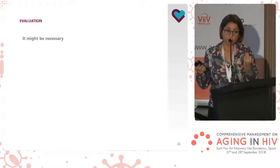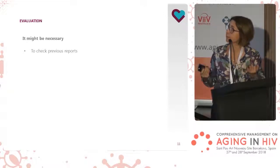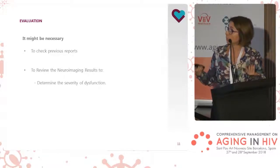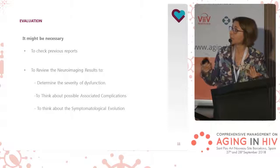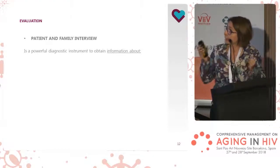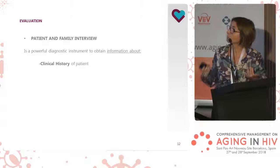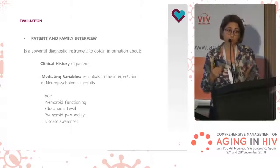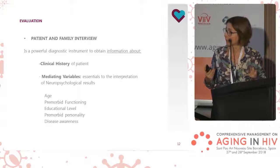Before the first interview, it may be necessary to check previous reports, review new imaging results, determine the severity of dysfunctions, think about possible associated complications, and consider the symptomatological evolution. The first interview with the patient and family, if possible, is a powerful diagnostic interview to obtain information about clinical history and mediating variables essential to interpretation of neuropsychological results: age, pre-morbid functioning, educational level, pre-morbid personality, and disease awareness.